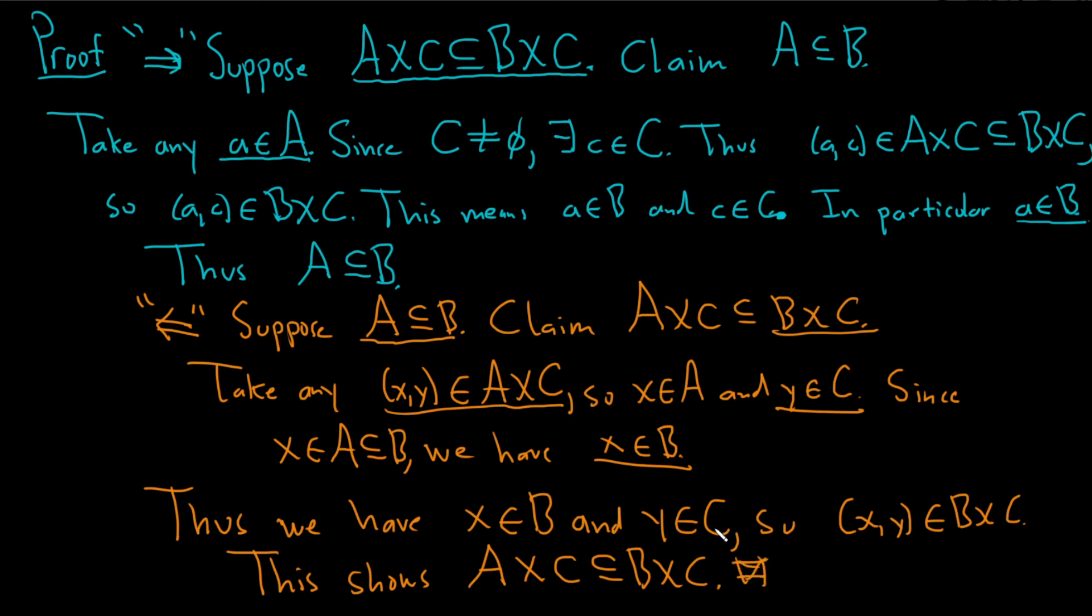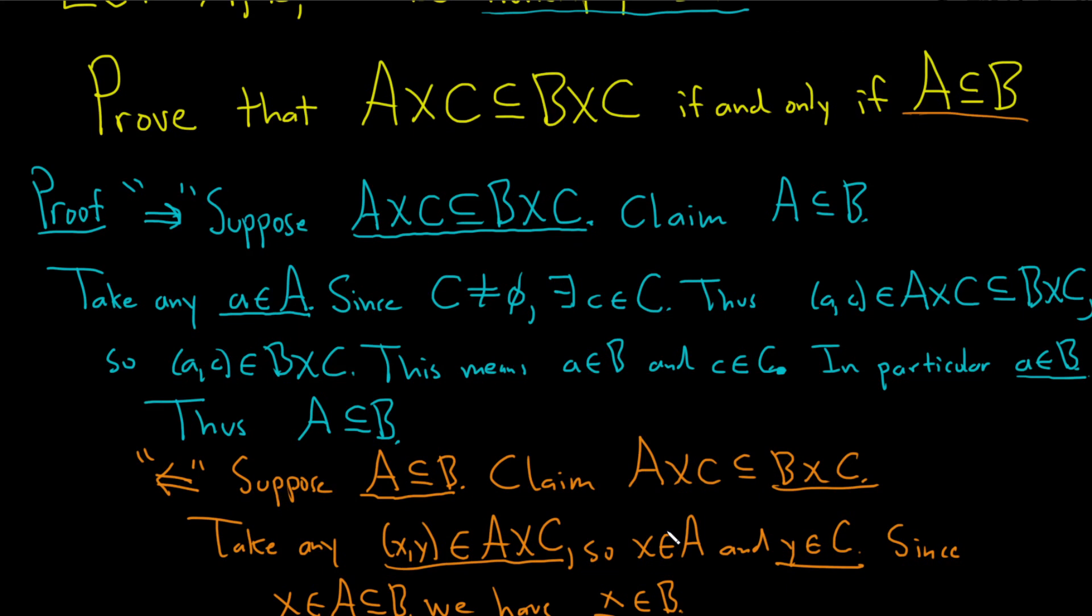So we had to show this statement here. Let's just go over it really quickly. So we first showed this direction here. So we assume that this is true. And then we show this is true. So we did that here, followed a series of steps, used the non-emptiness of C, and then we arrived at this. That takes care of this implication.